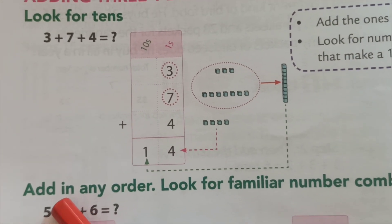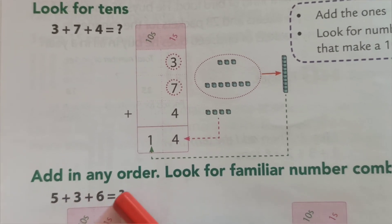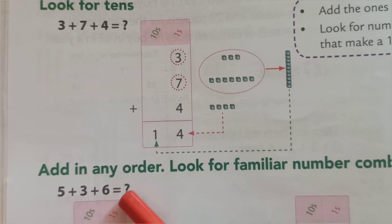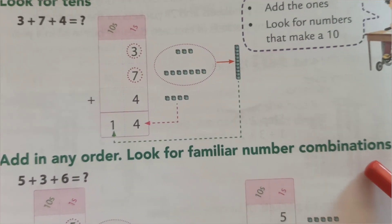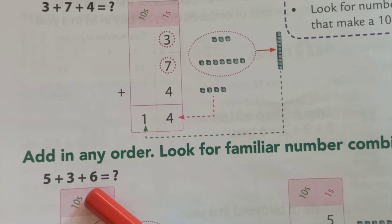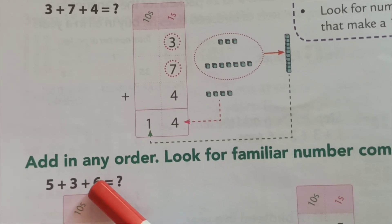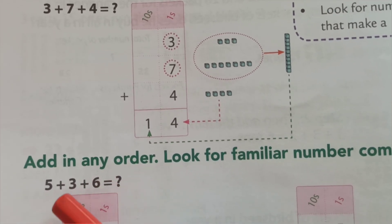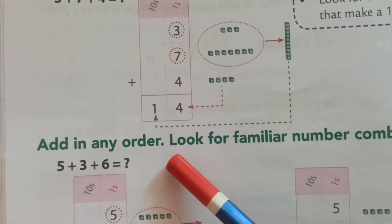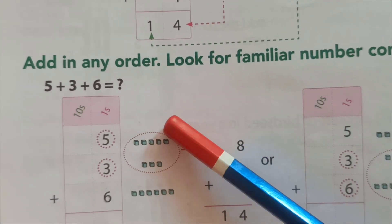Again see, add in any order. See, 5 plus 3 plus 6. Look for familiar number combination. You can add 6 plus 3, 5 plus 3 plus 6, or 3 plus 5 plus 6, whatever.